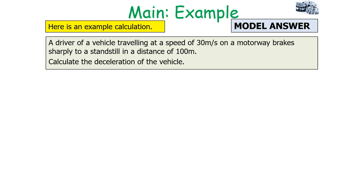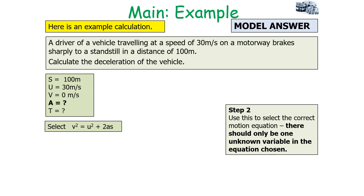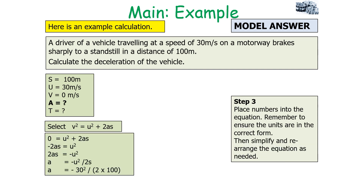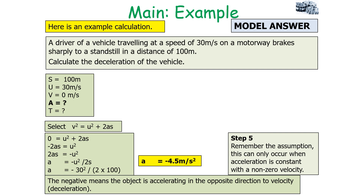Another example: A driver travelling at 30 m/s on a motorway brakes sharply to a standstill in a distance of 100 metres. Calculate the deceleration of the vehicle. Write out variables S, U, V, A, T. Select the equation V² = U² + 2AS, with only one unknown. Placing in the numbers gives A = −30² / (2 × 100). Therefore A = −4.5 m/s². A negative value means the object is accelerating in the opposite direction to the velocity — that is, decelerating. Remember the assumption is that acceleration is constant, which is always the case when using SUVAT equations.